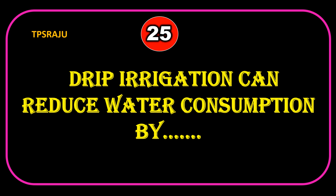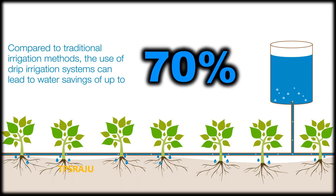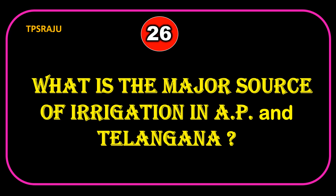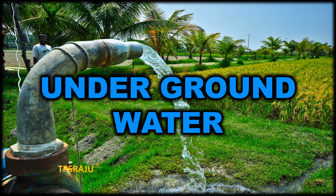Drip irrigation can reduce water consumption by 70%. What is the major source of irrigation in Andhra Pradesh and Telangana? Underground water.